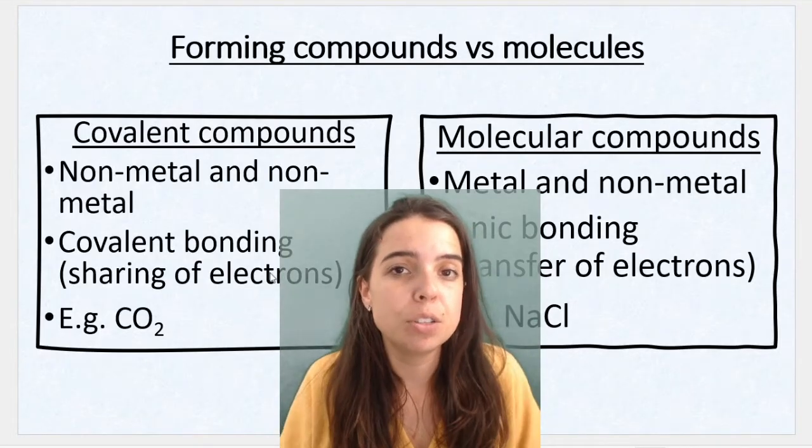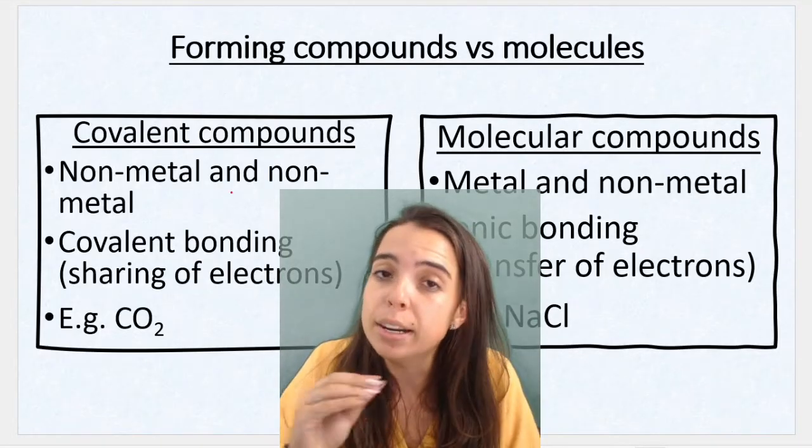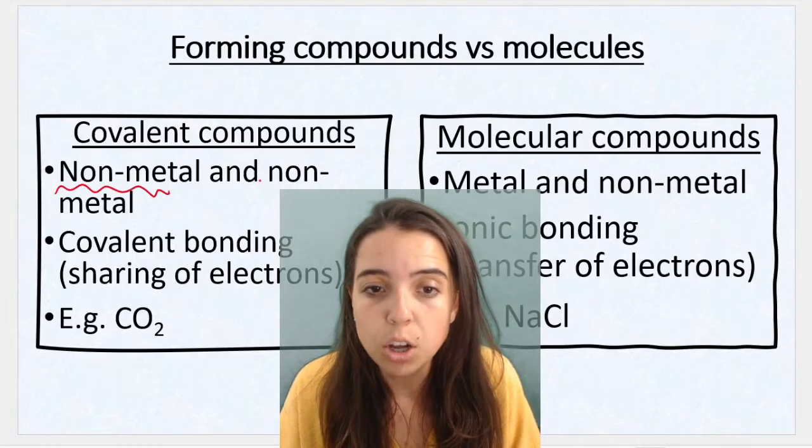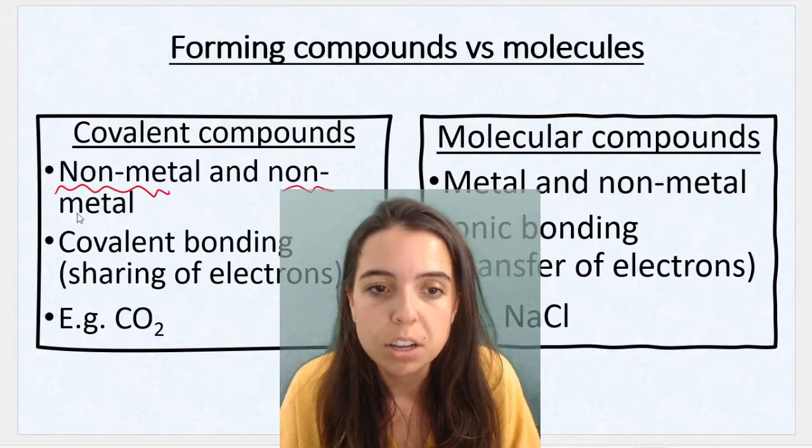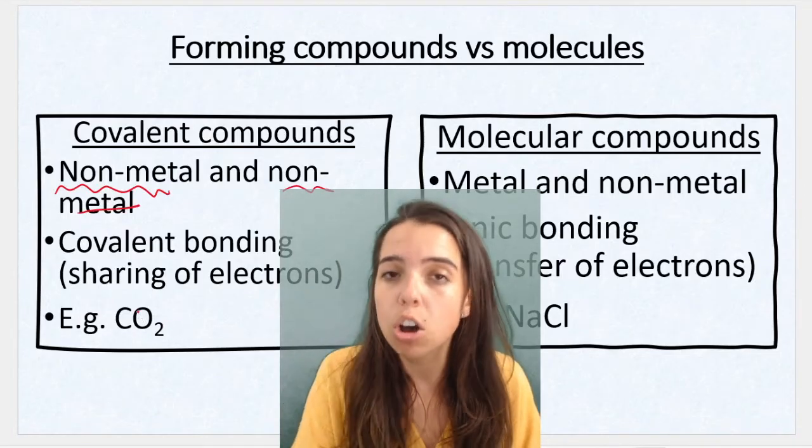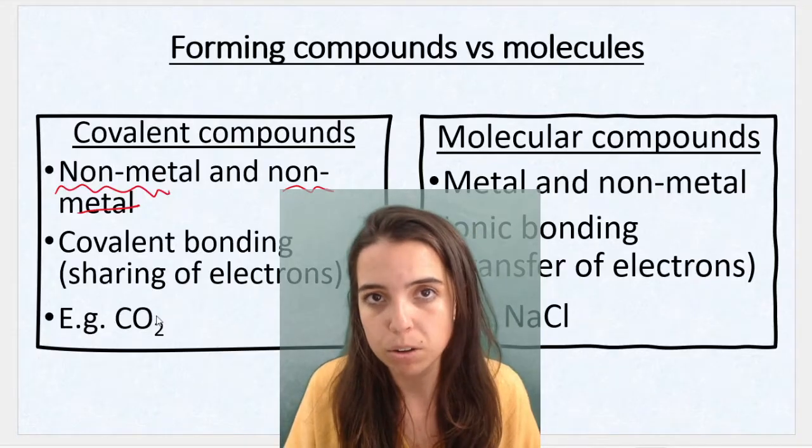There's a slight difference though. When I speak about covalently bonded compounds, I'm speaking about a non-metal bonding with a non-metal. So for example, carbon dioxide. Carbon is a non-metal, oxygen is a non-metal. That's a covalent compound.